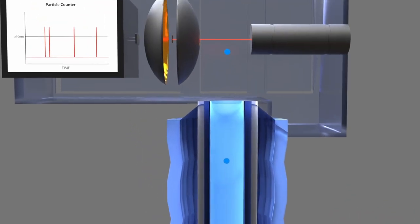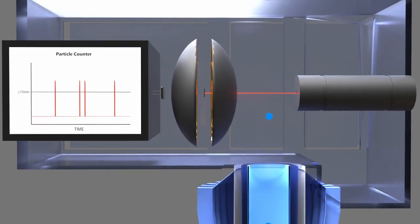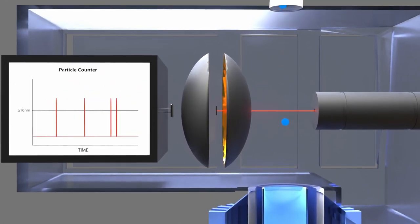As more vapor condenses onto the droplets, they grow in size until they are large enough to be detected by an optical particle counter that counts particles based on a light scattering technique. As the droplets pass through the laser beam, light is scattered onto a photodiode, generating a pulse of electrical current.